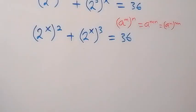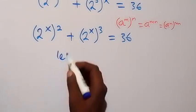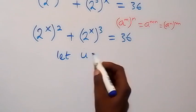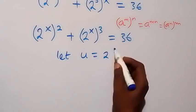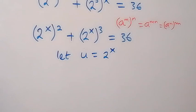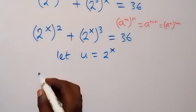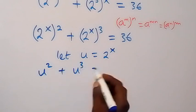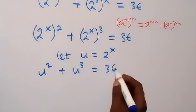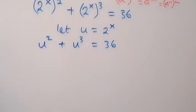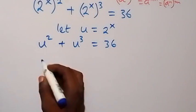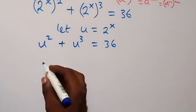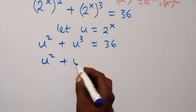In the next step, we can use a letter to represent 2 raised to power x. So let the letter u be equal to 2 raised to power x. From here, this becomes u squared plus u cubed equals 36.